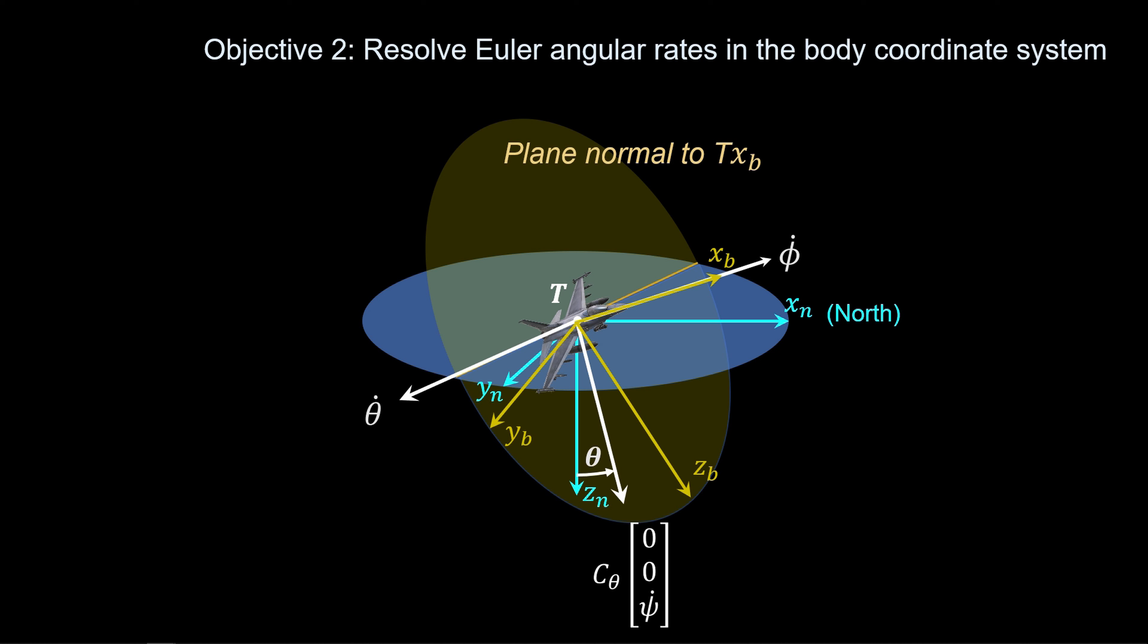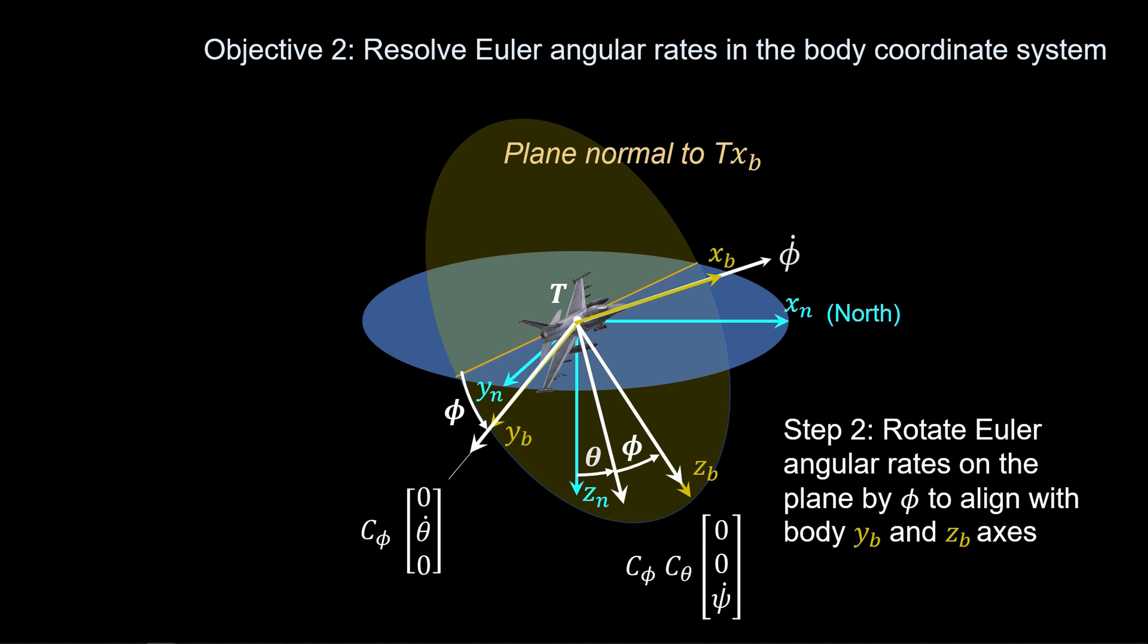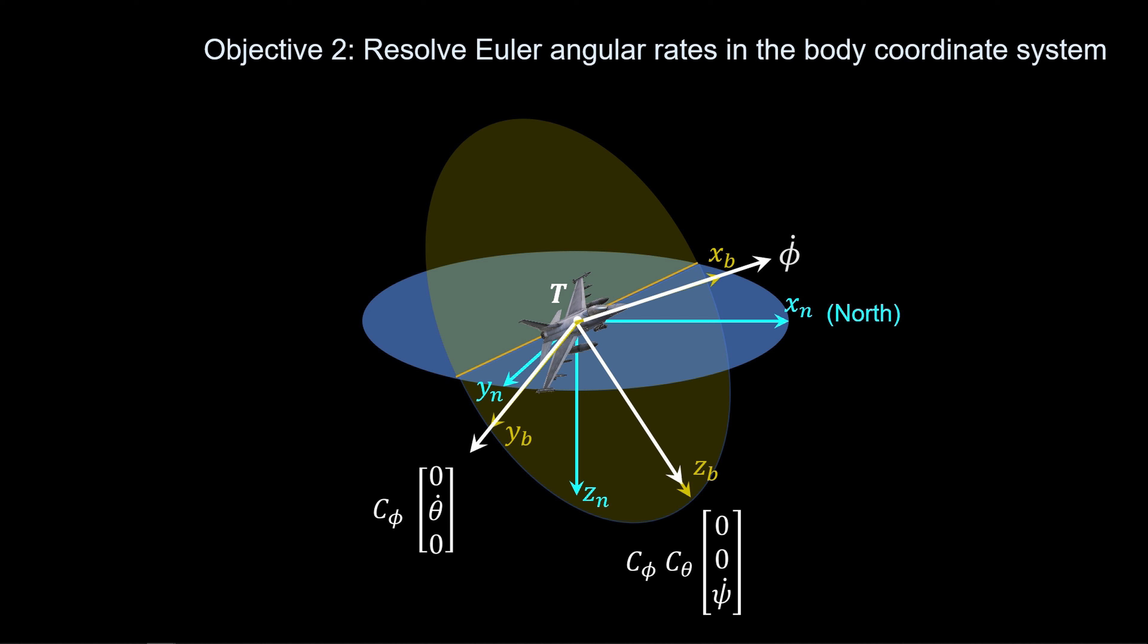Now, the rotated Psi-dot is on the body YZ plane. Also note that theta-dot is on the YZ plane, too. Our second step involves rotating these vectors by the roll angle phi to align them with the body Y and Z axes. To do this, we multiply these vectors by C-phi, the planar rotation matrix.